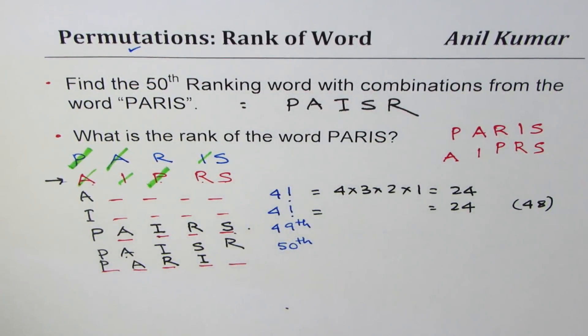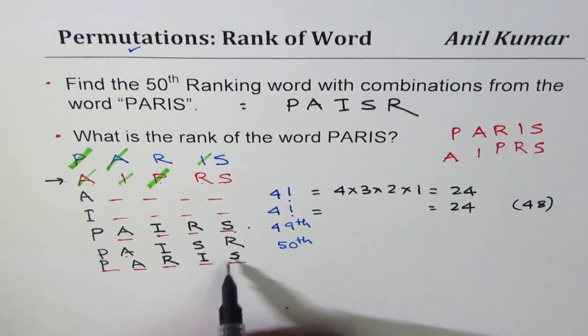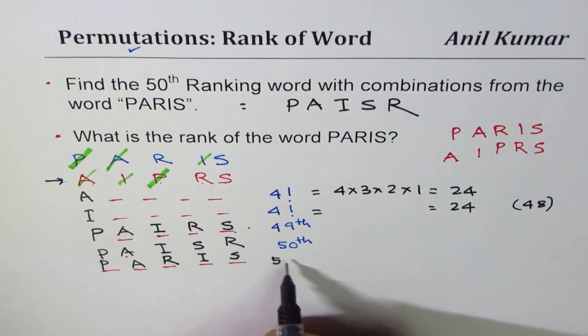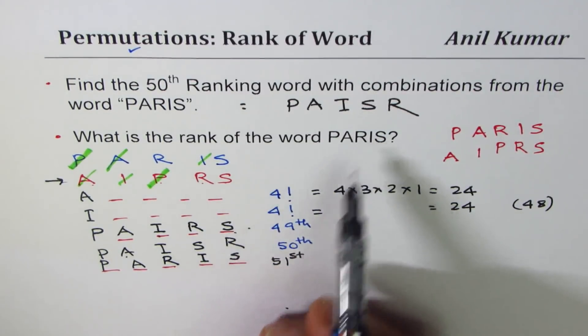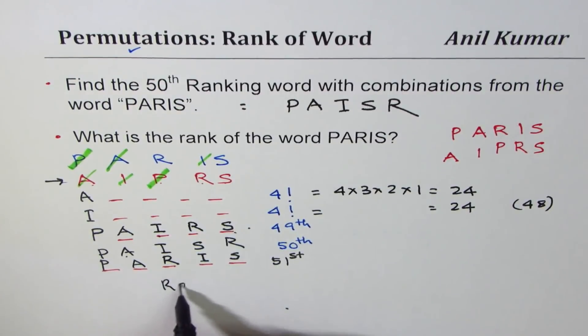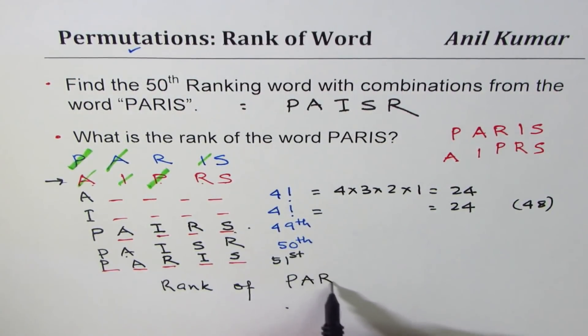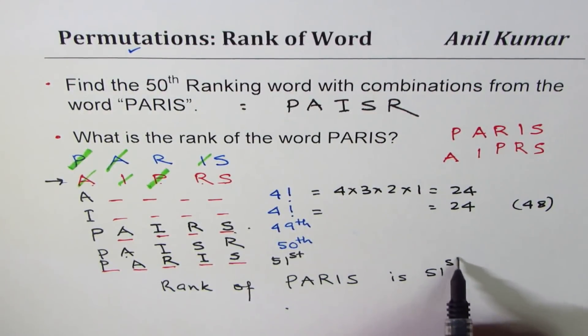And then next is S. So that is actually the 51st word in our list. So we can say that the rank of word Paris is 51st. So rank of Paris is 51st.